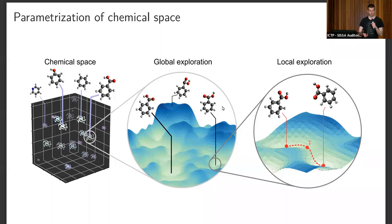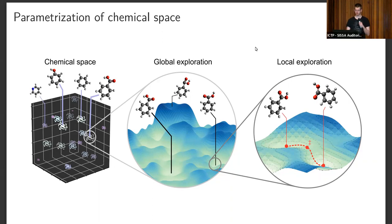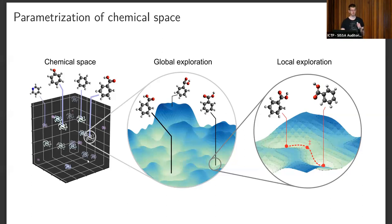In general, what do we want to do with neural network potentials? We want to parametrize chemical space — this could be a potential energy surface in a local region if you want to search for different conformers, or this could also be a more global exploration, or even the whole chemical space with completely different compositions.